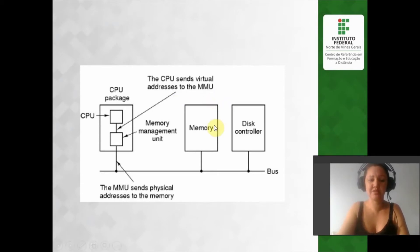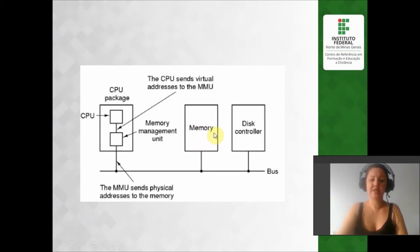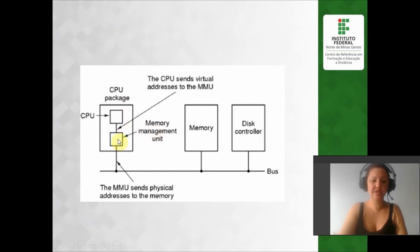Para entender um pouquinho melhor como funciona essa MMU, é nesse esquema que a gente consegue perceber. Aqui o controlador de disco, disco rígido, a memória RAM, memória principal. E aqui, dentro da CPU, tem o processador e o dispositivo que é a MMU, que faz essa tradução. Ela compõe o chip do processador.